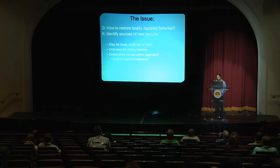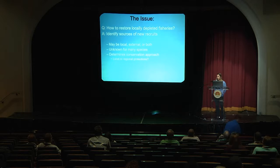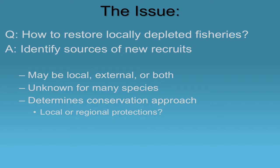These sources, if you want to think about them in a geographic context, may be local — fish that are self-sustaining — or they may be external sources. If you think about islands of the Bahamian archipelago, it could be other islands, or even more broadly across the Caribbean and Western Atlantic, because many species have pretty broad connectivity possibilities. For many fish species, these are completely unknown. This is fundamentally important for determining the most effective conservation approaches, because if connectivity is occurring between islands or across the region, then focusing solely on local conservation efforts may not be sufficient to restore these locally depleted fisheries.